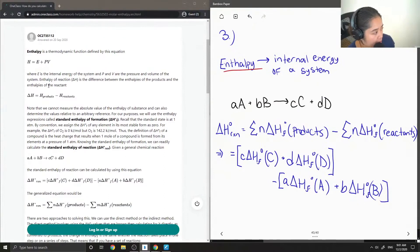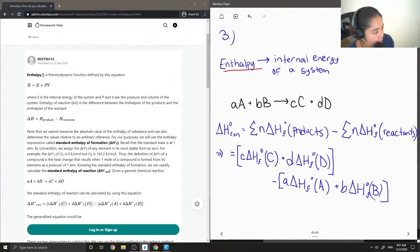Let's see what the junior tutor said. Enthalpy is a thermodynamic function defined by this equation, where H equals E plus PV. E is the internal energy of the system, and P and V are the pressure and volume of the system. Enthalpy of reaction is the difference between the enthalpies of the products and the enthalpies of the reactant.